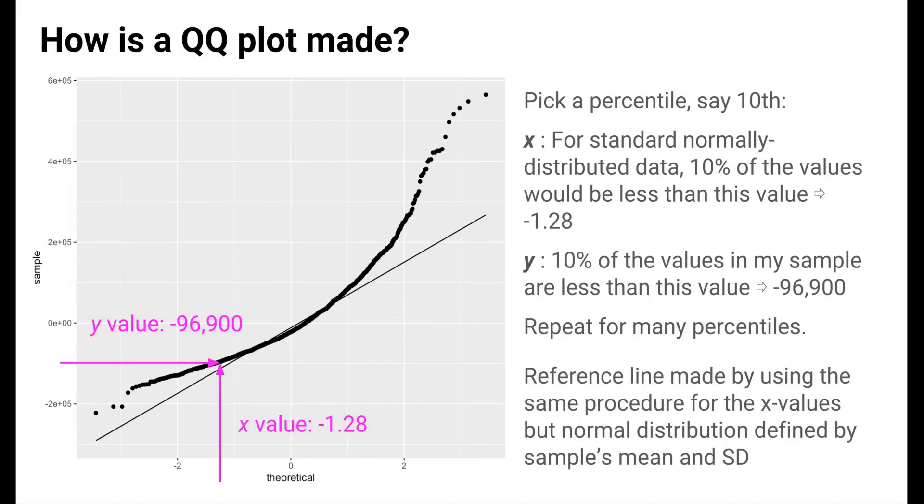The reference line is made using the same procedure as for the x-axis values, except that the normal distribution used is one that matches the mean and standard deviation of the values in the sample. If the residuals from our model were normally distributed, these points would fall on the reference line. Clearly, this assumption is violated, so our statistical inferences might be inaccurate.